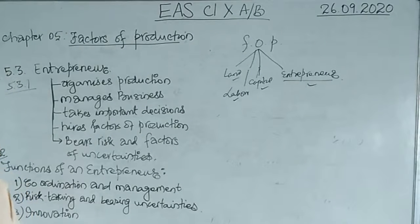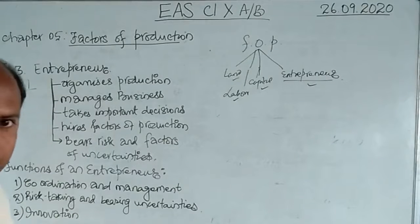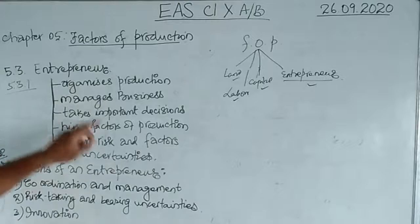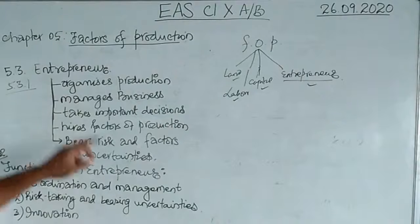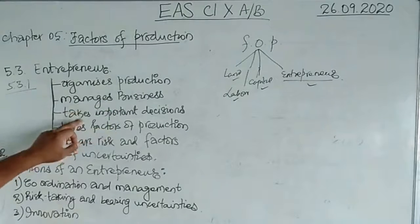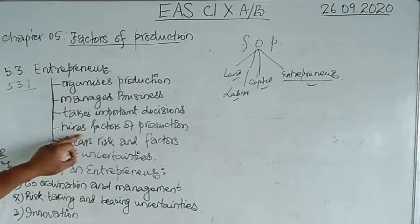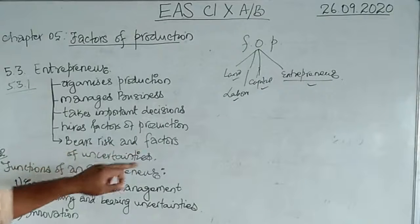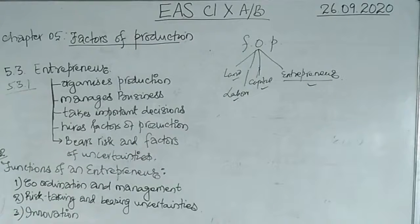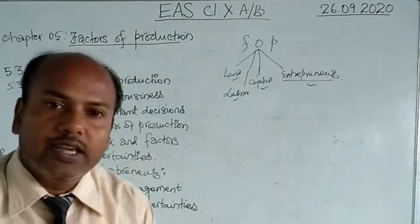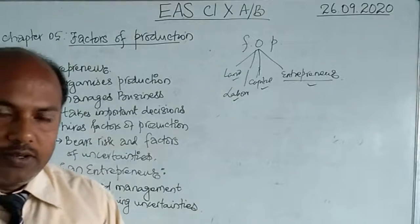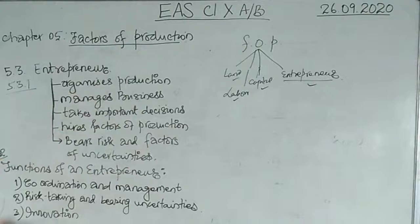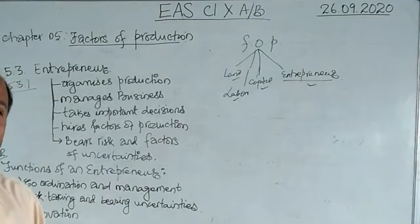An entrepreneur is a person who performs all these important functions: organizes production, manages business, takes important decisions, hires factors of production, and bears risks and factors of uncertainties. That person is an entrepreneur.